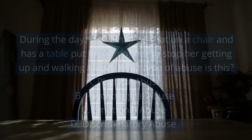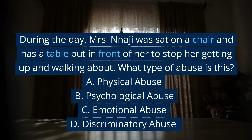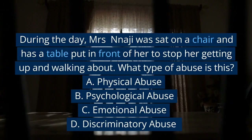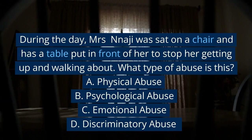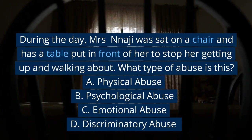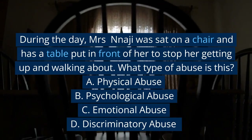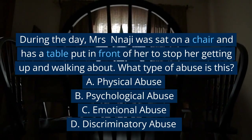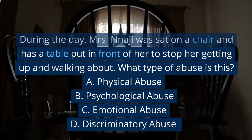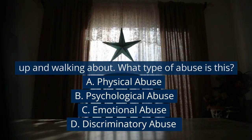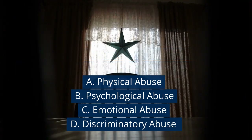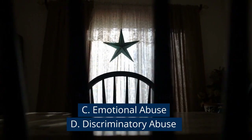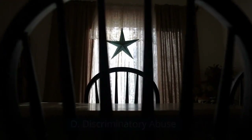Question 4: During the day, Mrs. Najee was sat on a chair and has a table put in front of her to stop her getting up and walking about. What type of abuse is this? A. Physical abuse. B. Psychological abuse. C. Emotional abuse. D. Discriminatory abuse.